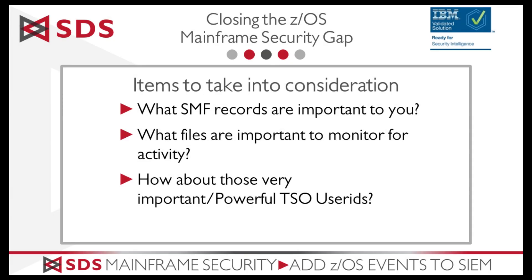Some items to take into consideration if you're going down this path and want to bridge this security gap: what SMF records are important to you? We monitor a whole slew of SMF records, but you'll have to determine which ones you want to turn on. What files are important to you? SYS1.PARMLIB would be a good candidate to monitor. VSA will be able to monitor all updates and any activity that occurs on the SYS1.PARMLIB PDSs. I'll show you in my live demo how you can add these PDSs or datasets to the VSA configuration ISPF panel to monitor your most important datasets.